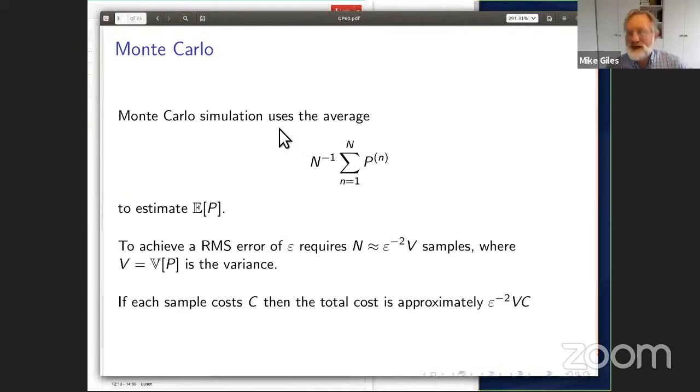Starting with plain Monte Carlo, we average N independent samples. To achieve a root mean square error of epsilon, the number of samples is approximately epsilon to the minus two times the variance. If each sample costs C, then the total computational cost is approximately epsilon to the minus two VC.